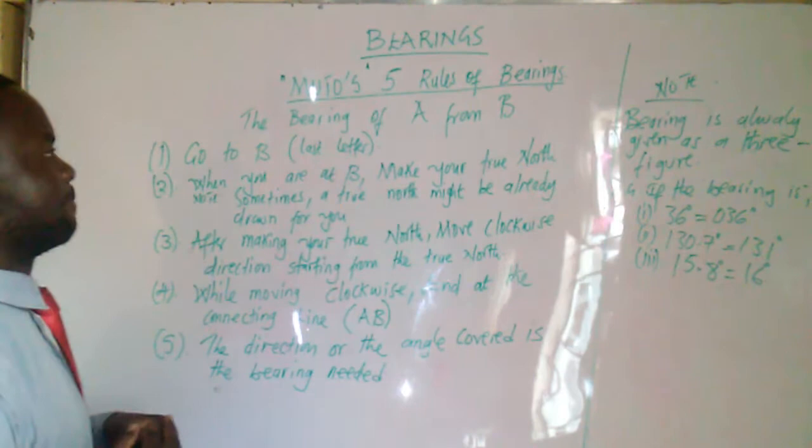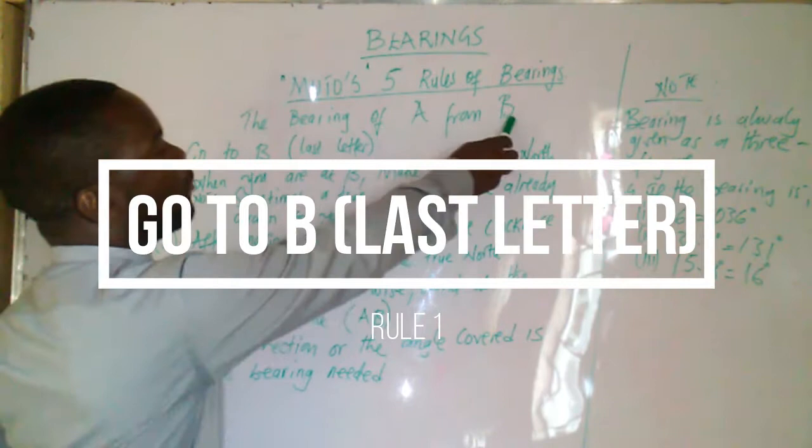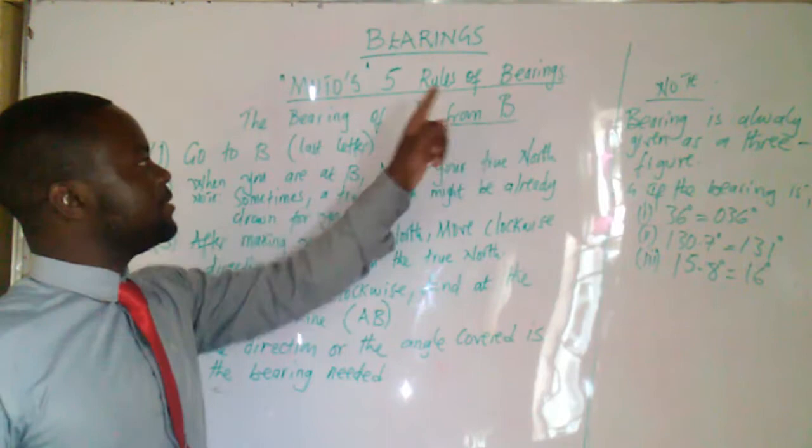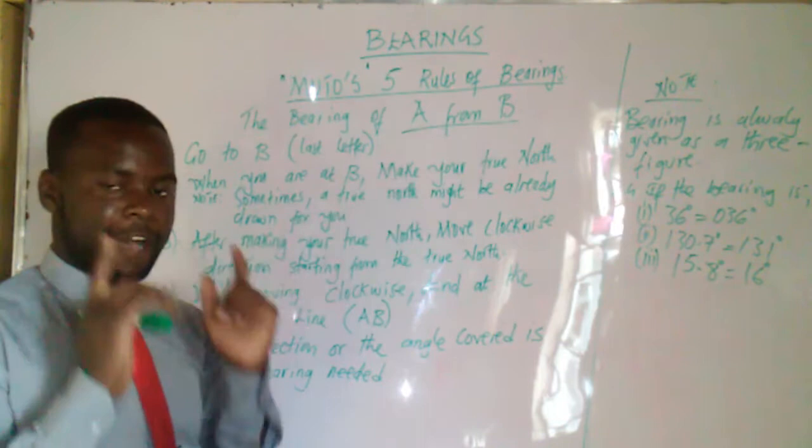Rule number one is saying go to B. What do I mean by go to B? Let's assume you have a question which is telling you to find the bearing of A from B. Always go to the last letter. Whether it's a bearing of X from Y, then go to Y. Whether it's a bearing of L from M, then go to M. In this case, it's a bearing of A from B. Therefore, rule number one, go to B, which is the last letter.